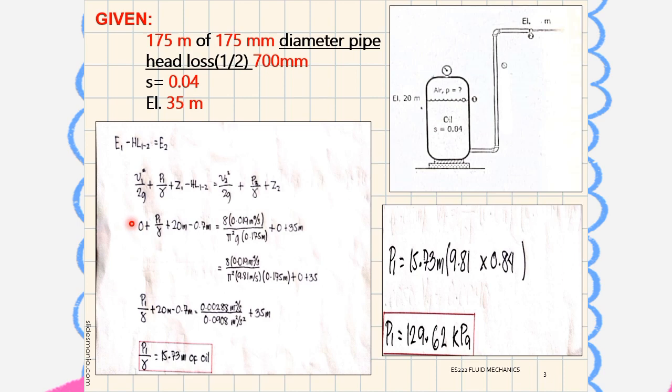So, 0 plus P1 over gamma plus Z2 minus 0.7 meters equals V2 squared, which is 8 times 0.019 cubic meters per second.